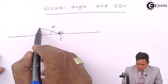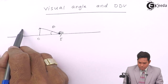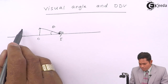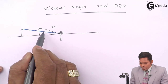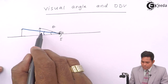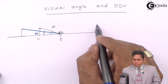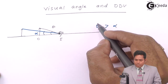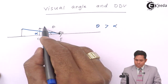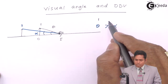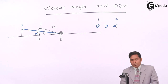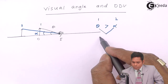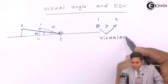Now the same object is placed further away. You can see the object is the same, the height is the same, but what angle will it subtend now? It will subtend a different angle. Now it will subtend this angle — suppose this is theta for the near position and alpha for the far position. You can see that theta is greater than alpha. So this angle that is subtended is called the visual angle, whether theta in the first position or alpha in the second position.